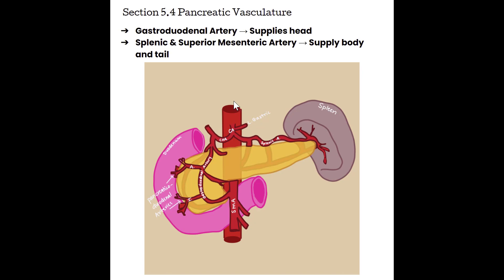Starting from the aorta — one of the big first branches is the celiac axis. The left branch is the splenic artery, the right branch is the common hepatic artery. The common hepatic artery is going to give rise to the gastroduodenal artery. After the gastroduodenal artery branches off, the common hepatic artery turns into the proper hepatic artery as it heads to the liver.